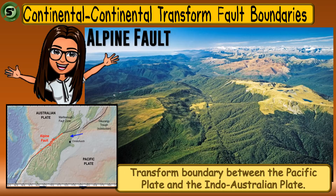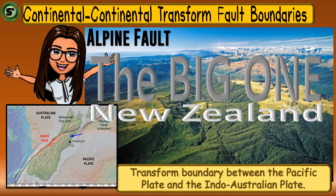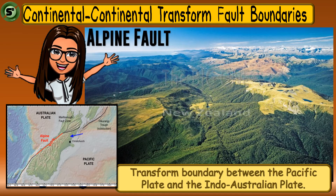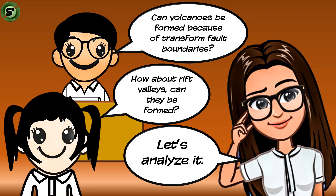This is another continental-continental transform fault boundary between the Pacific plate and the Indo-Australian plate. As these two plates slide past each other, the Alpine Fault formed in New Zealand. In transform fault boundaries, no crust is melted nor destroyed, and no magma is released to become new crust. Remember, transform fault boundaries cannot cause the formation of volcanoes and rift valleys. This type of boundary can only displace rocks.